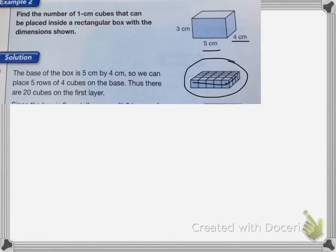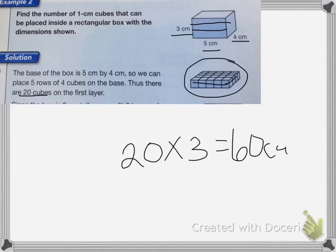So there are 20 cubes on that first layer. Since we have 3 centimeters high, that means I'm going to have 3 rows to fill up this shape. I'm going to take those 20 cubes and multiply it by the 3 rows, so I end up with 60 cubes in the whole box.